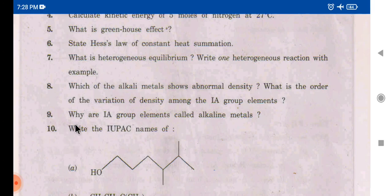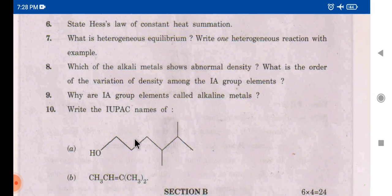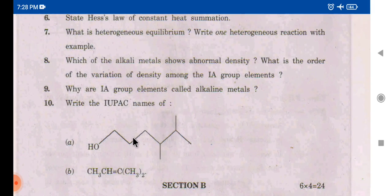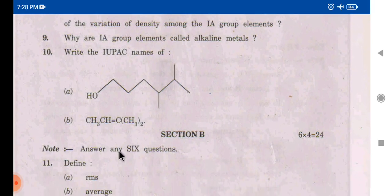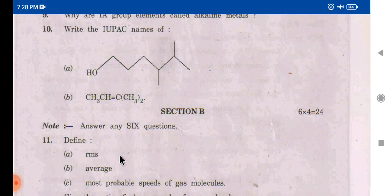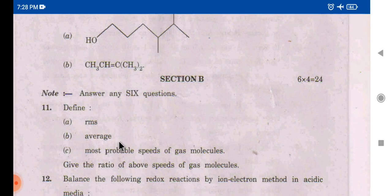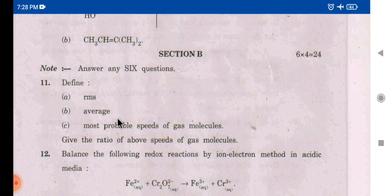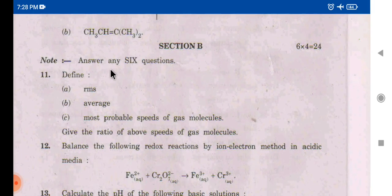Next is a 10-one-mark question: write the IUPAC names of the given compounds — first one and second one. You can write organic IUPAC names — two out of them. Moving to the next section below, you have 8 questions and need to answer 6.